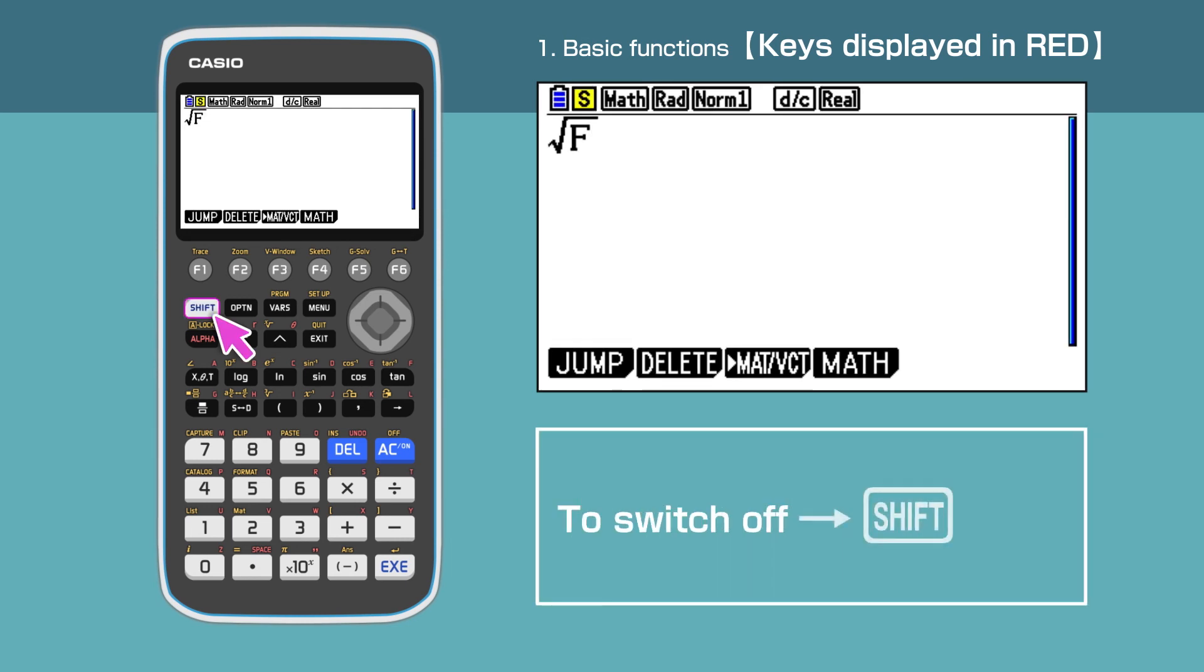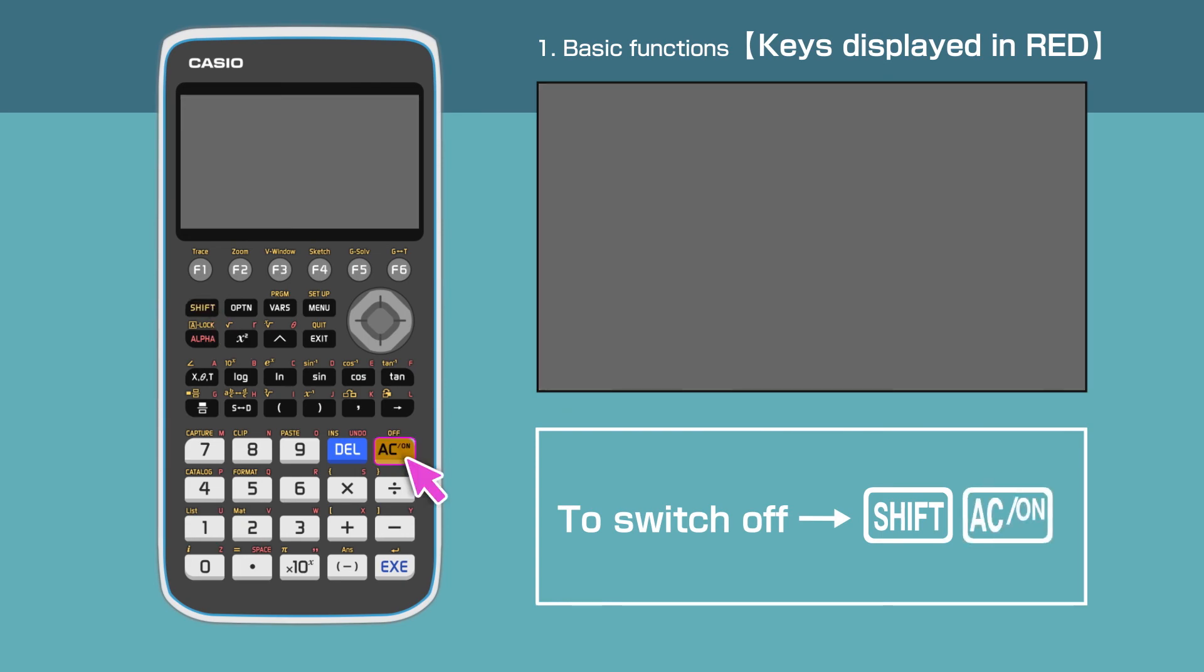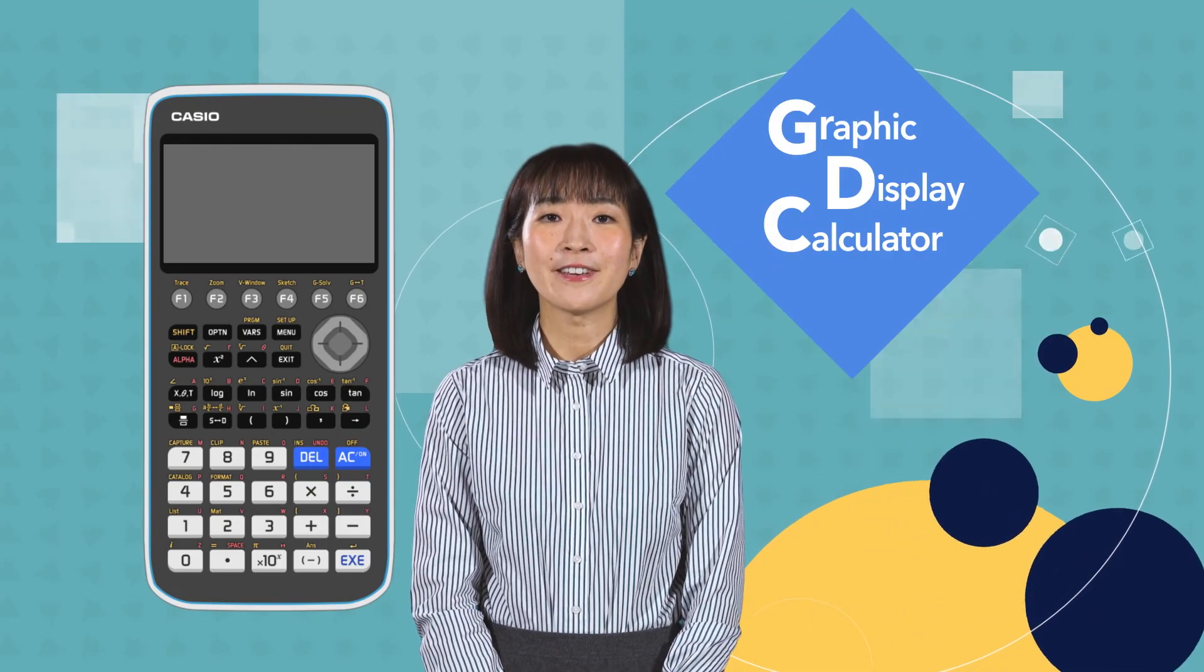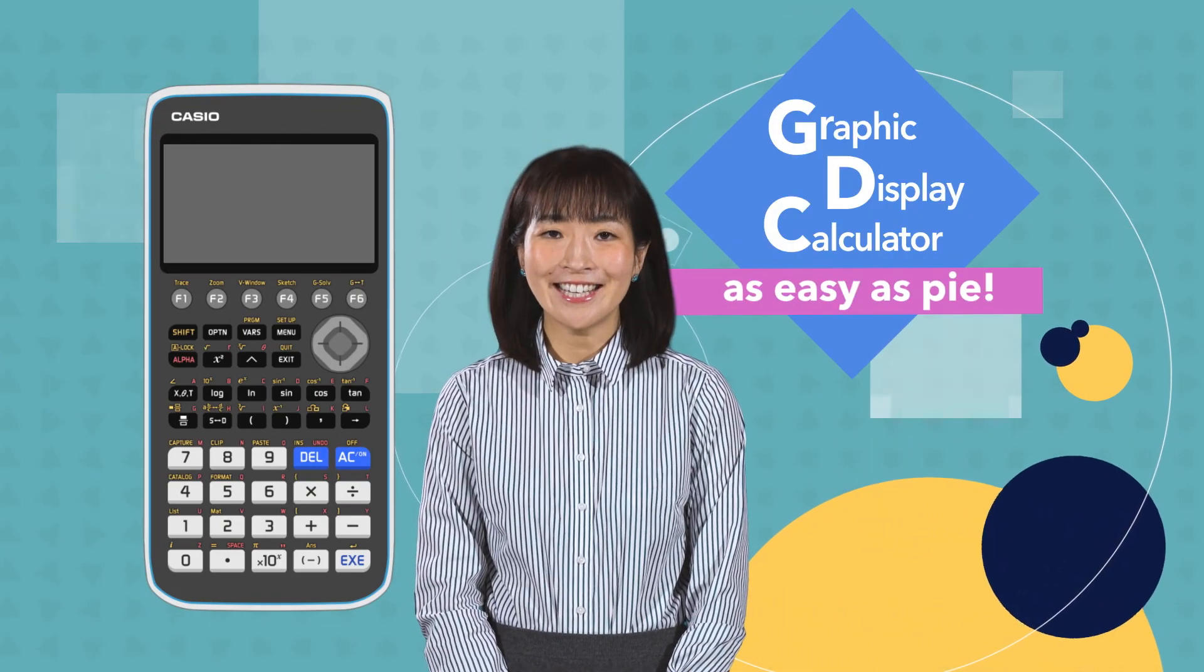To finish, press Shift then AC. In this video we've shown how to enter equations on a graphic display calculator. As easy as pi!